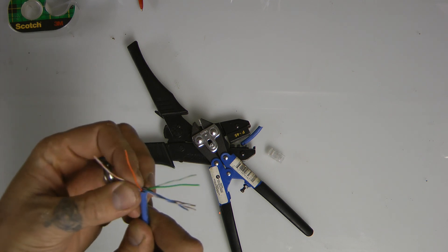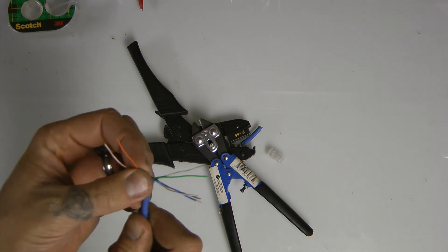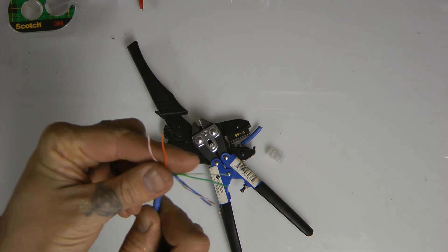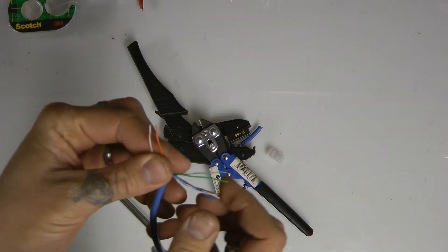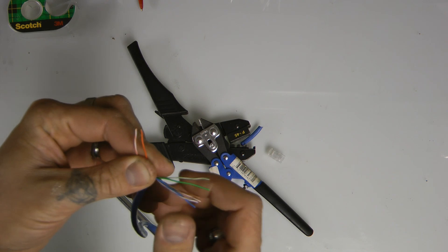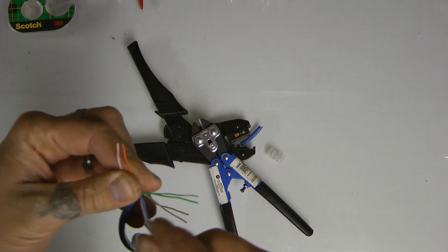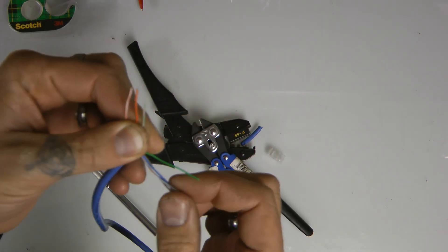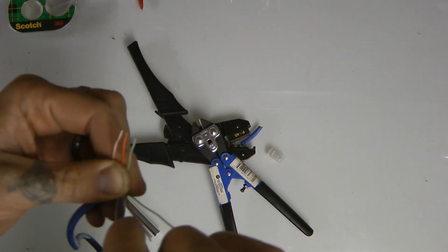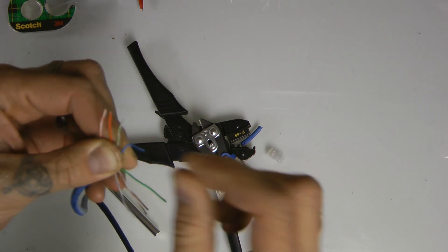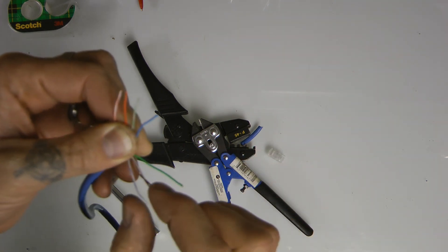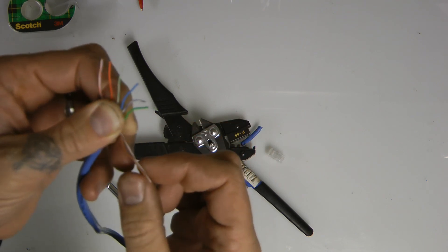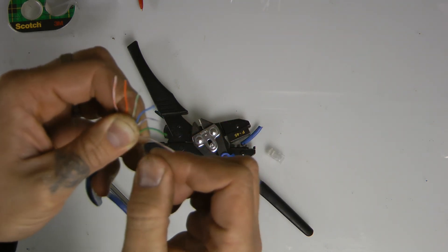This sequence is light orange, orange. Watch what I do. I put my finger in here, and I go like this, and start putting these wires in the order I'm going to say. Light orange, orange, light green, blue, light blue, green, light brown, brown.